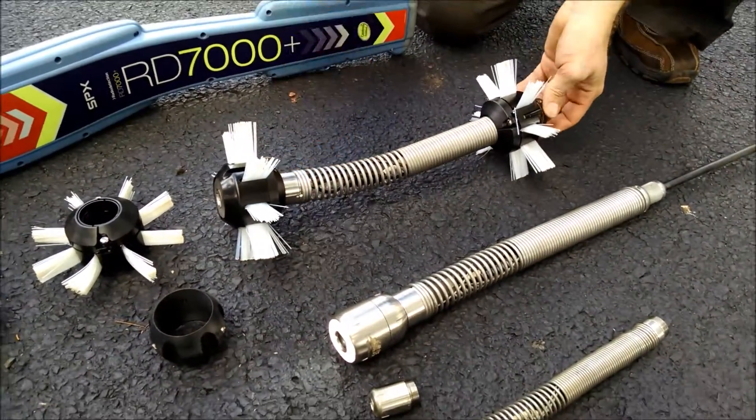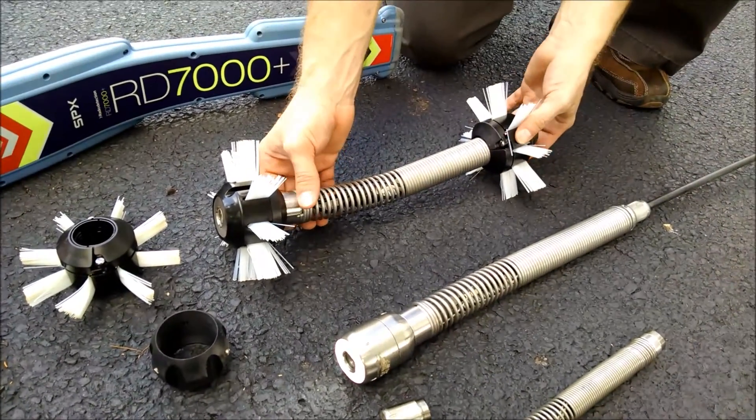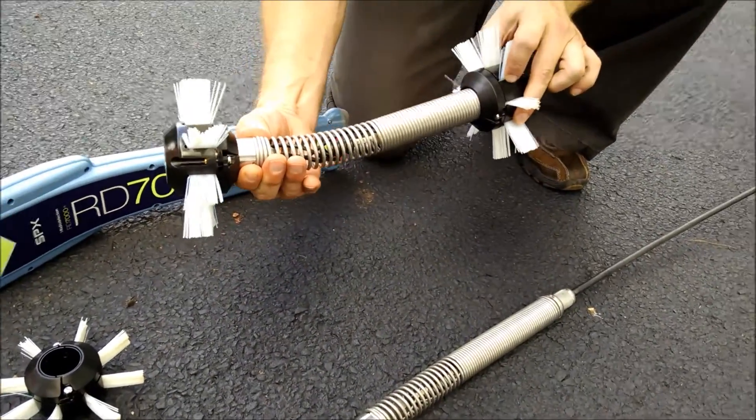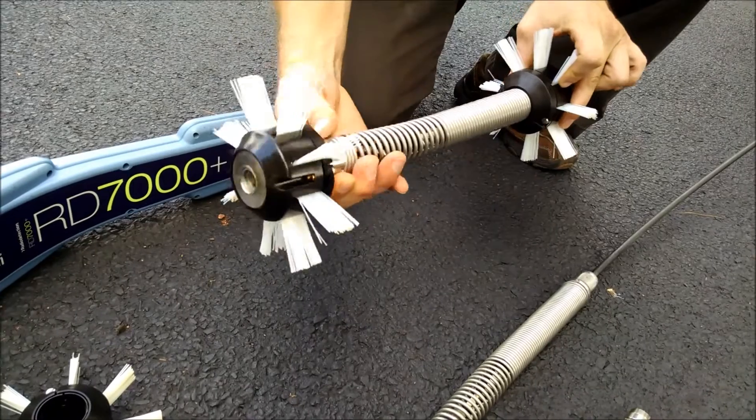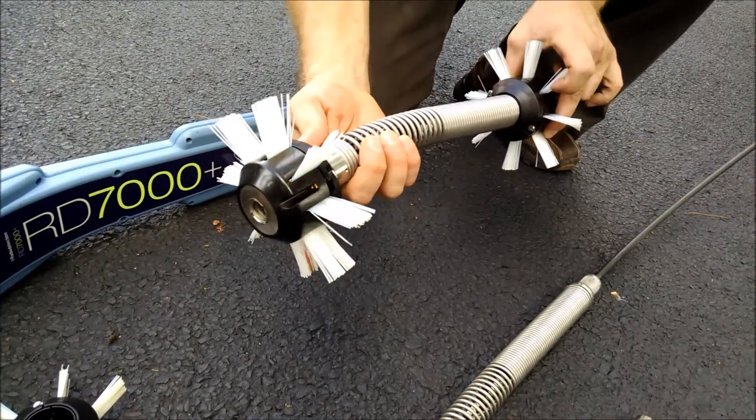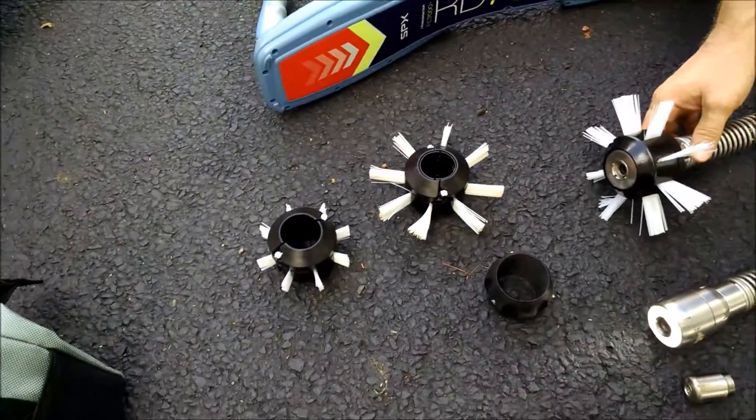If you need the camera to be lifted up higher off of the bottom of the pipe, for example, to get out of the water, here you see an already assembled setup with the skid balls with the brushes on them. These longer brushes will help center the camera head in a 6 to 8 inch pipe.